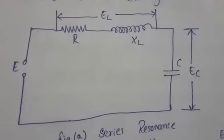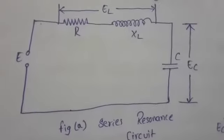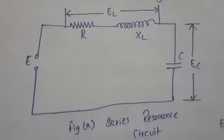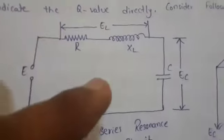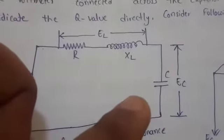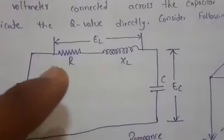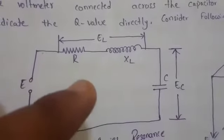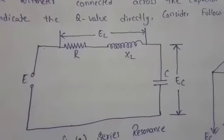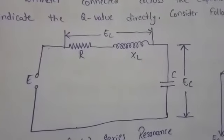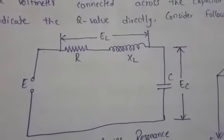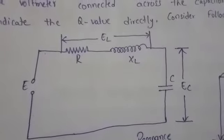Consider this figure for the series resonant circuit. Here, XL is the inductive reactance, XC is the capacitive reactance, I is the current flowing through the circuit, E is the applied voltage, and R is the resistance of the coil.